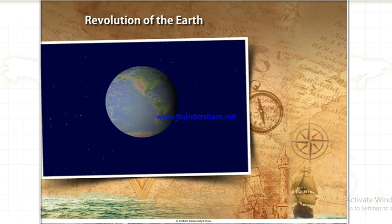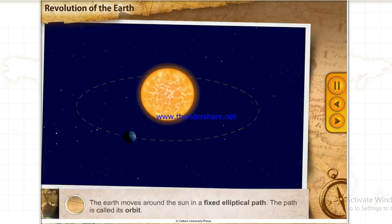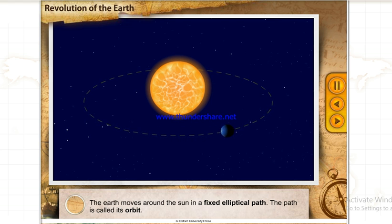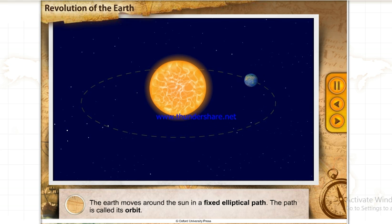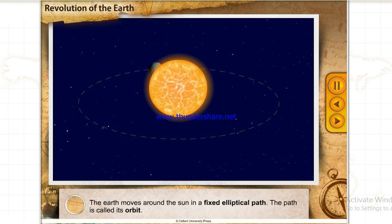Revolution of the Earth. The Earth moves around the Sun in a fixed elliptical path. The path is called its orbit.